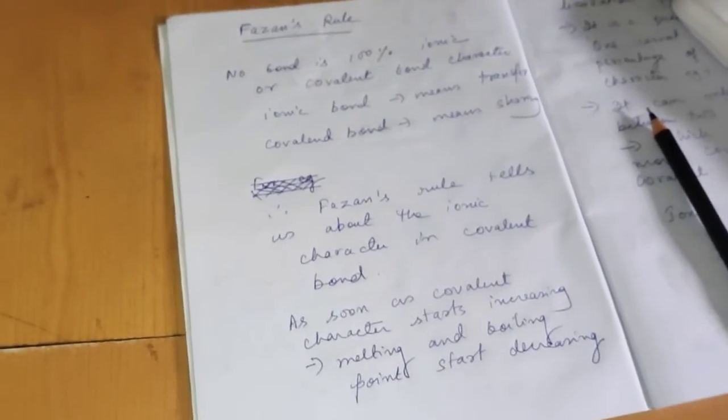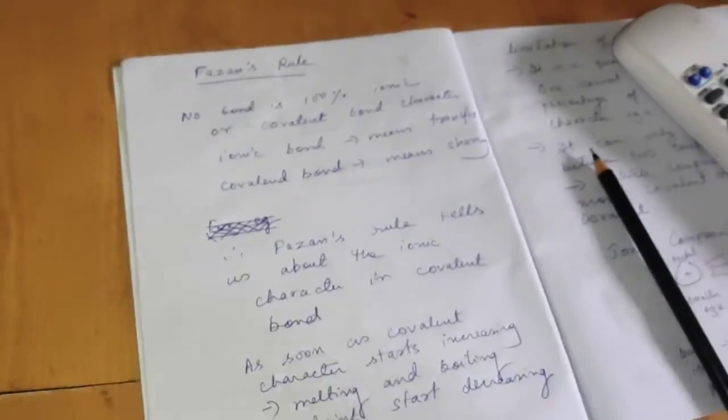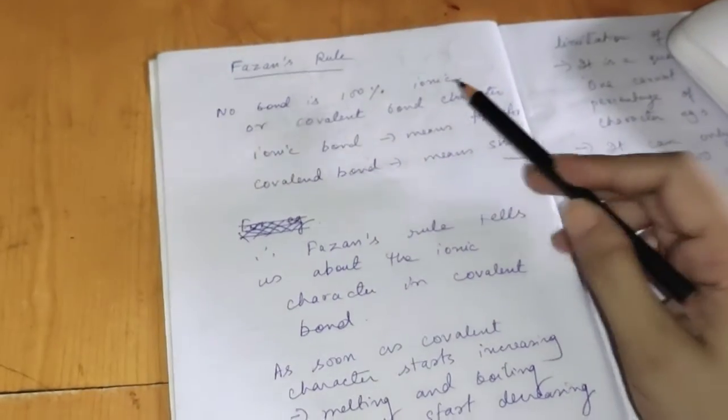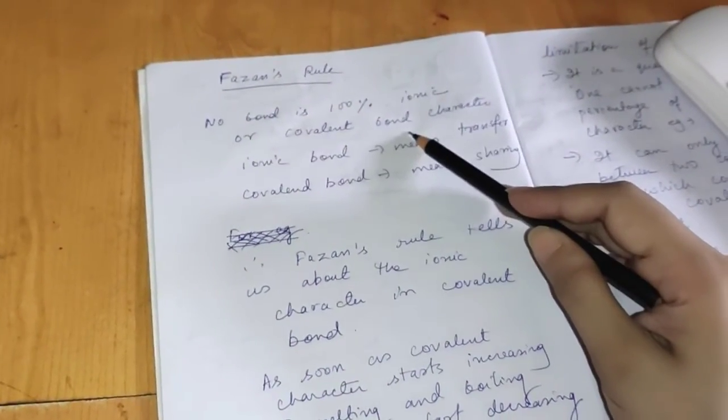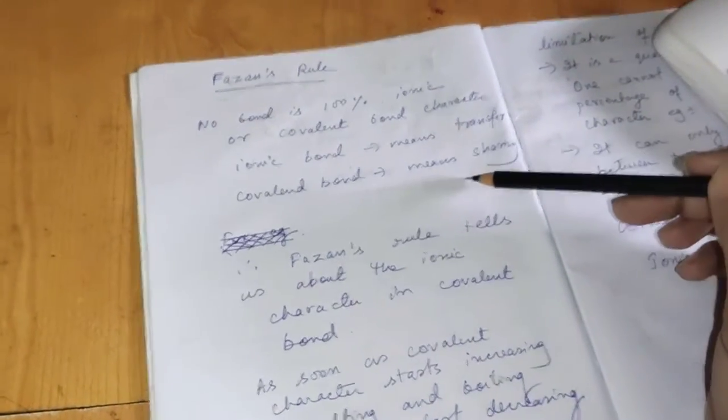So today's topic is Fajan's rule. No bond is 100% ionic or covalent. So what is ionic bond?